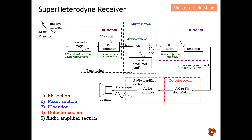In the RF section, there are mainly two components: number one, the pre-selector stage, and number two, the RF amplifier. The pre-selector stage is essentially a band-pass filter — it selects the band they want to pass and suppresses the rest of the signal. The RF amplifier boosts the signal, which is still weak after traveling kilometers before being received by the antenna.